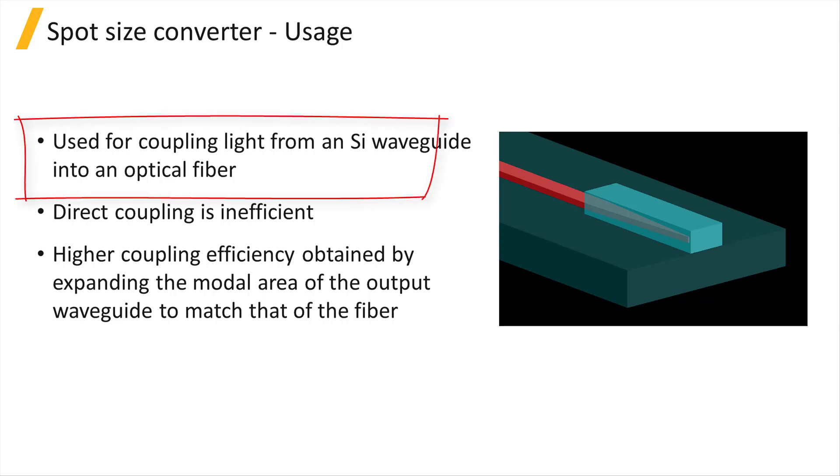The Spot Size Converter is used for coupling light from a silicon waveguide into an optical fiber. Directly coupling the light from an SI waveguide to an optical fiber is not efficient due to the large difference in the modal area.